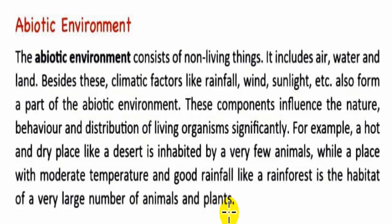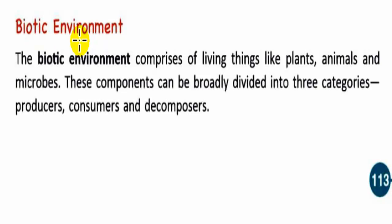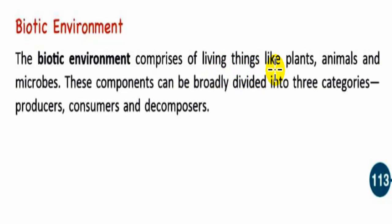Next, let's see the biotic environment. The biotic environment comprises living things like plants, animals, and microbes. These components can be broadly divided into three categories: producers, consumers, and decomposers. Let's see what each of these means.